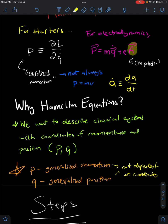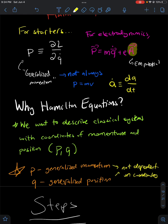Now q here represents the generalized position. You might be wondering why we use q for that. The reason is that if we used x, that's suggestive of Cartesian coordinates, and if we used r, that's suggestive of polar coordinates. So we want to describe our system in a coordinate-independent way, which motivates us to use q as some general coordinate-independent position.